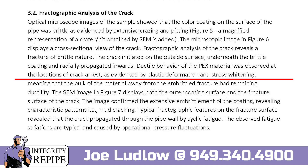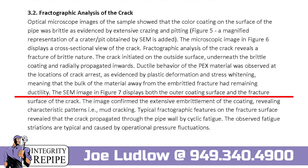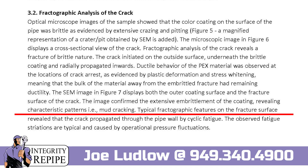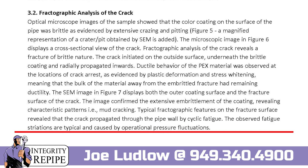Ductile behavior of the PEX material was observed at the locations of crack arrest, as evidenced by plastic deformation and stress whitening, meaning the bulk of the material away from the embrittled fracture had remaining ductility. The SEM image in figure seven displays both the outer coating surface and the fracture surface of the crack, confirming extensive embrittlement of the coating and revealing characteristic mud cracking patterns. Typical fractographic features on the fracture surface reveal that the crack propagated through the pipe wall by cyclic fatigue, with observed fatigue striations caused by operational pressure fluctuations.